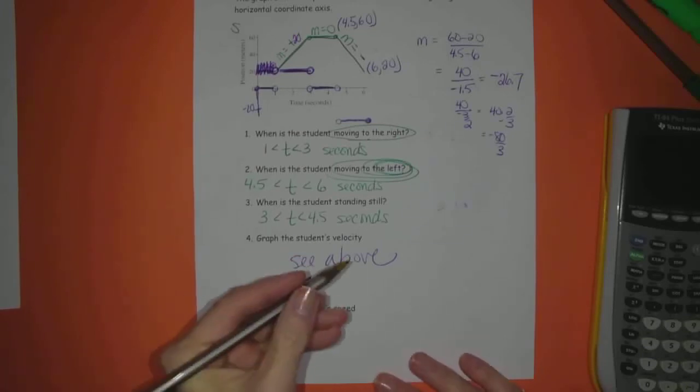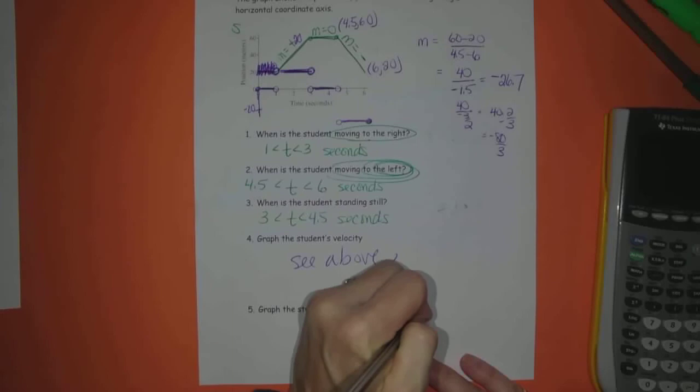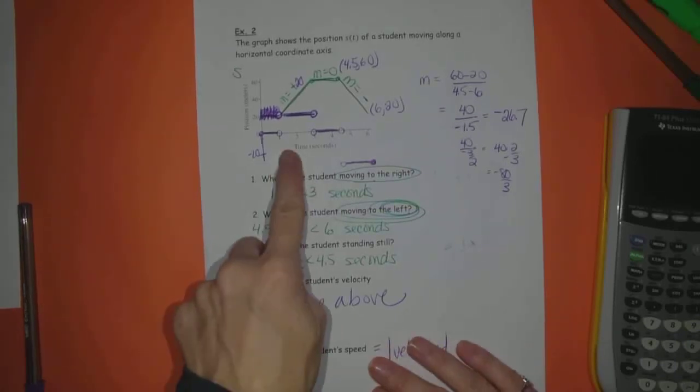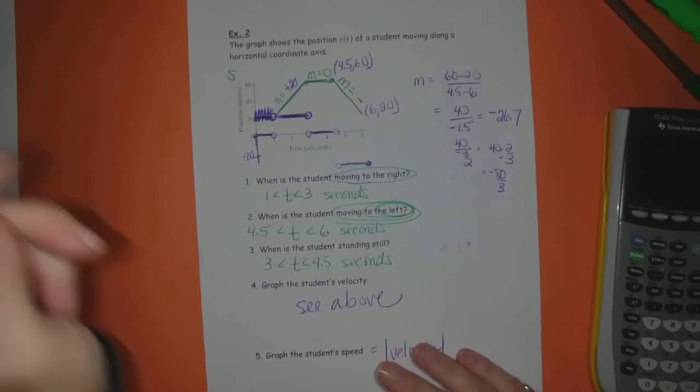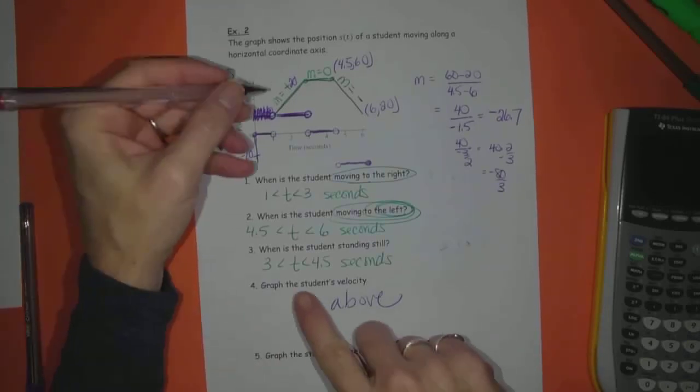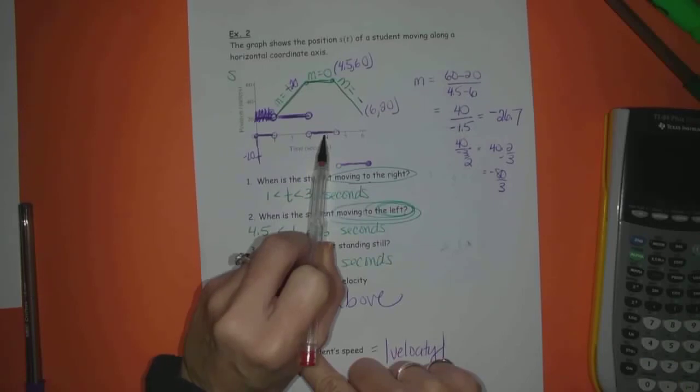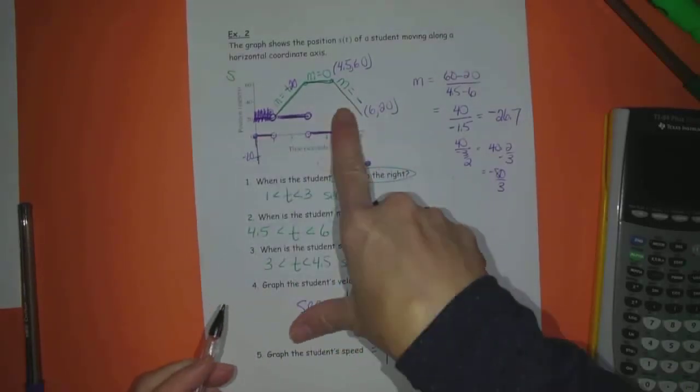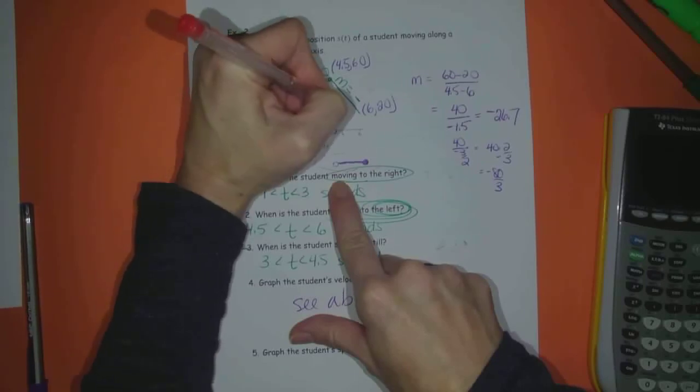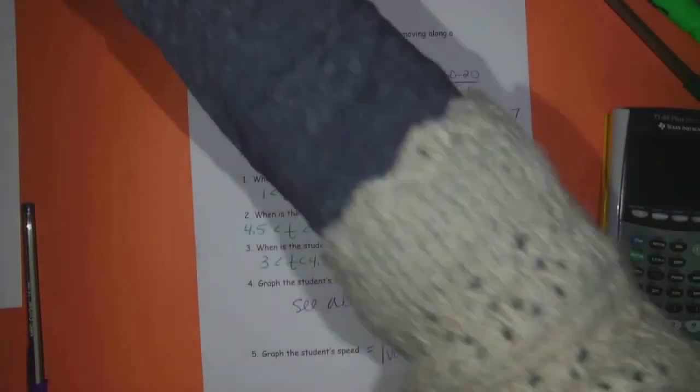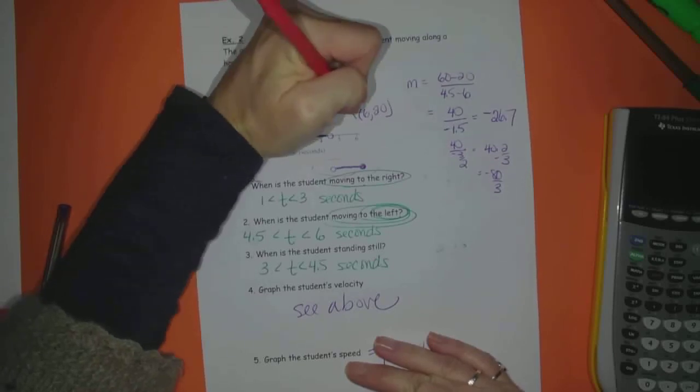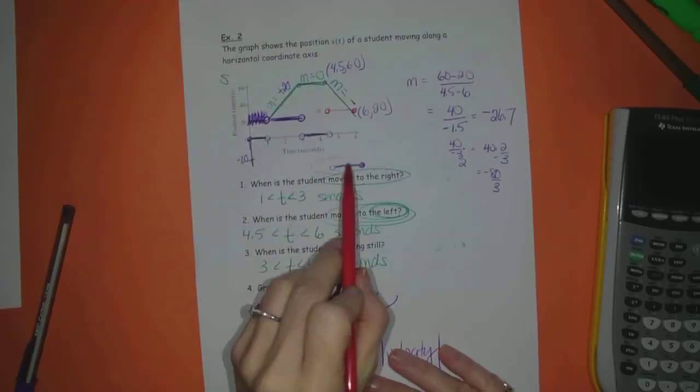Well, speed is equal to the absolute value of velocity. So all I have to do is take my purple graph and reflect those parts that are under the t-axis, reflect them over. So it's really simple to graph velocity, or yeah, speed. So speed would be all the same, same, same, take this guy, push him up positive to positive 26.7. So speed would just, oops, nope. Speed would be, that doesn't work. Speed would be, keep forgetting that's at like 4.5 here. So this part would just reflect up for speed.